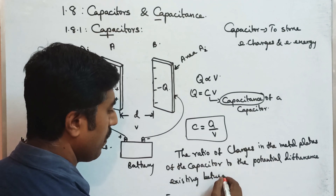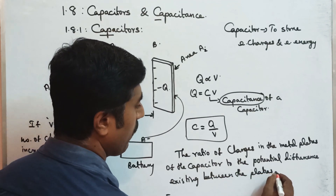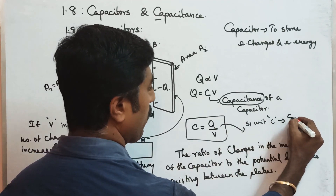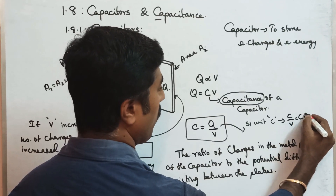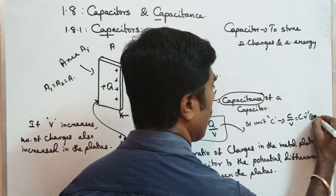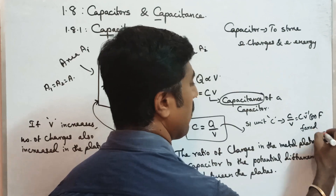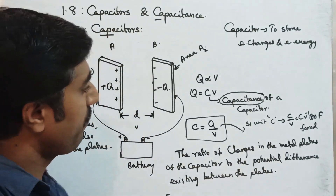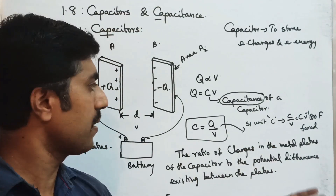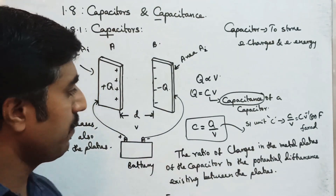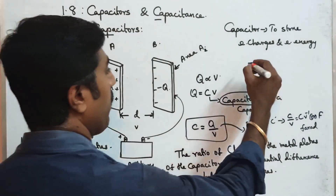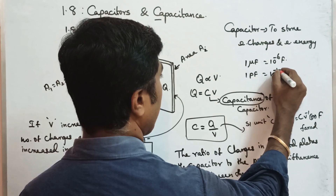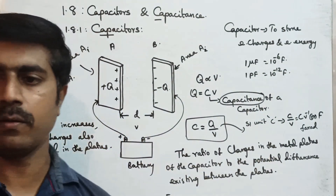The SI unit of capacitance is coulomb per volt, otherwise called farad - named after the scientist Michael Faraday. Farad is a large unit, so in practice we use smaller units: 1 microfarad equals 10 to the power minus 6 farad, and 1 picofarad equals 10 to the power minus 12 farad.